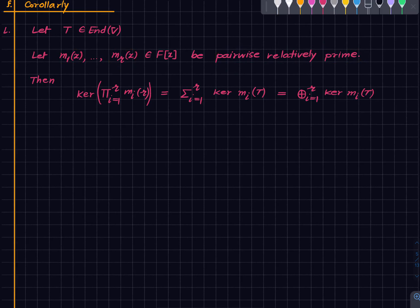Then we want to say that the kernel of the composite of these things—it doesn't matter in which order you take the composition, they all commute with each other—this kernel is same as the direct sum.